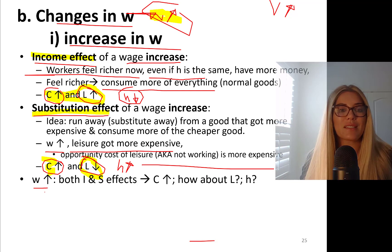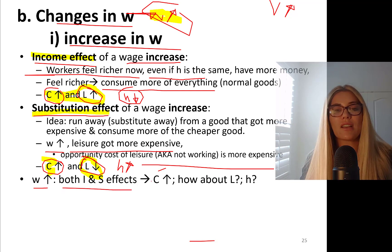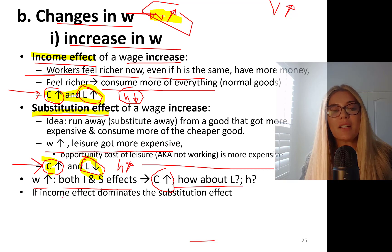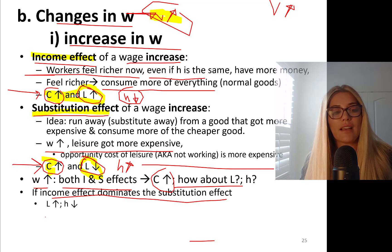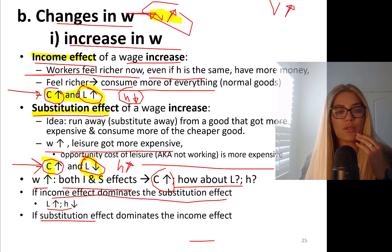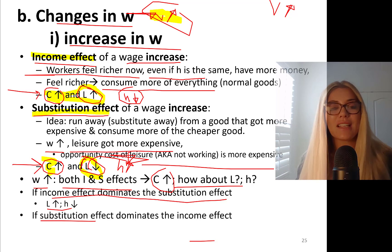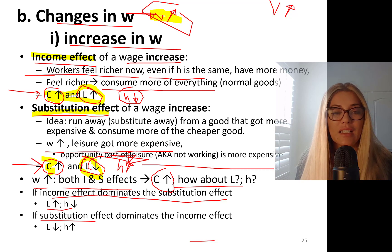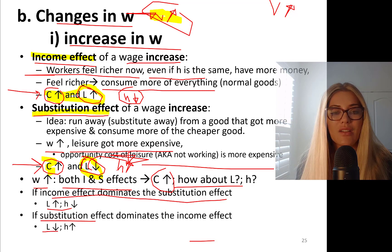To summarize: wage rate goes up. Both income and substitution effects say consume more consumption goods — consumption goes up. For leisure and hours of work, it depends. If income effect dominates the substitution effect, then leisure goes up and hours of work go down. If substitution effect dominates the income effect, then leisure goes down and hours of work go up.